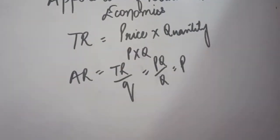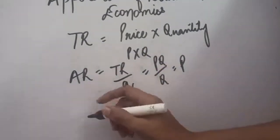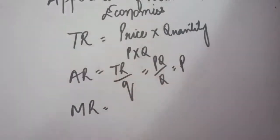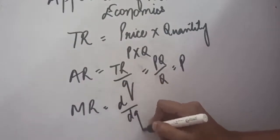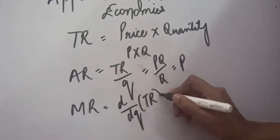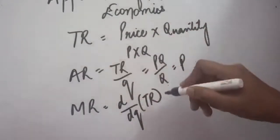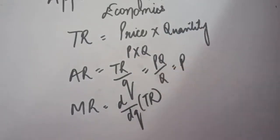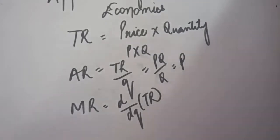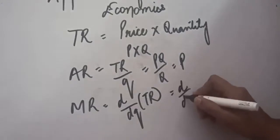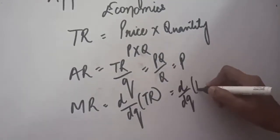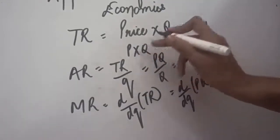In some questions you may be asked to calculate the marginal revenue. Marginal revenue is the derivative of total revenue. Total revenue is calculated as p × q, and when you take the derivative of this with respect to quantity, it becomes marginal revenue — that is, d/dq of (p × q).